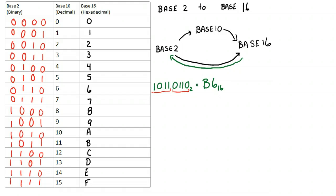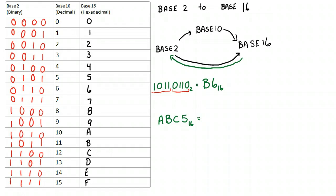So let's come up with an imaginary hexadecimal number: A, B, C, 5. Each one of these values represents 4 bits — a nibble.